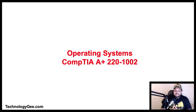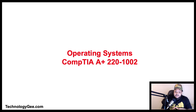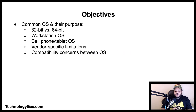What up everybody, this is your boy Tech G back with another video to help you successfully pass the CompTIA 220-1002 examination. In this video you will learn about common operating system types and their purposes as it relates to 32-bit versus 64-bit workstation operating systems, cell phone and tablet operating systems, vendor specific limitations and compatibility concerns between operating systems.